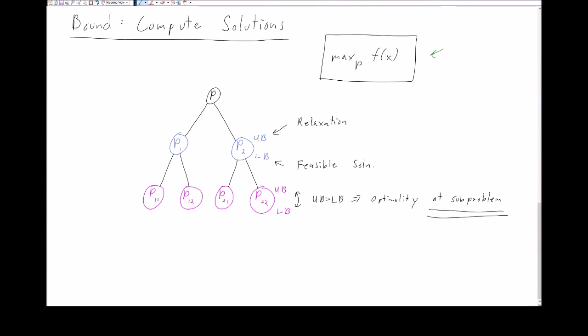When computing an upper and lower bound, our objective is to find circumstances where the upper and lower bounds meet each other. If our upper bound meets our lower bound for a particular subproblem, we know we have optimality. Unfortunately we only have optimality at the subproblem we're considering — so if bounds meet in the subproblem associated with P', we have an optimal solution only when the feasible region is restricted to P'. We don't have optimality for the original problem with feasible region P; expanding the feasible region could yield a better solution.